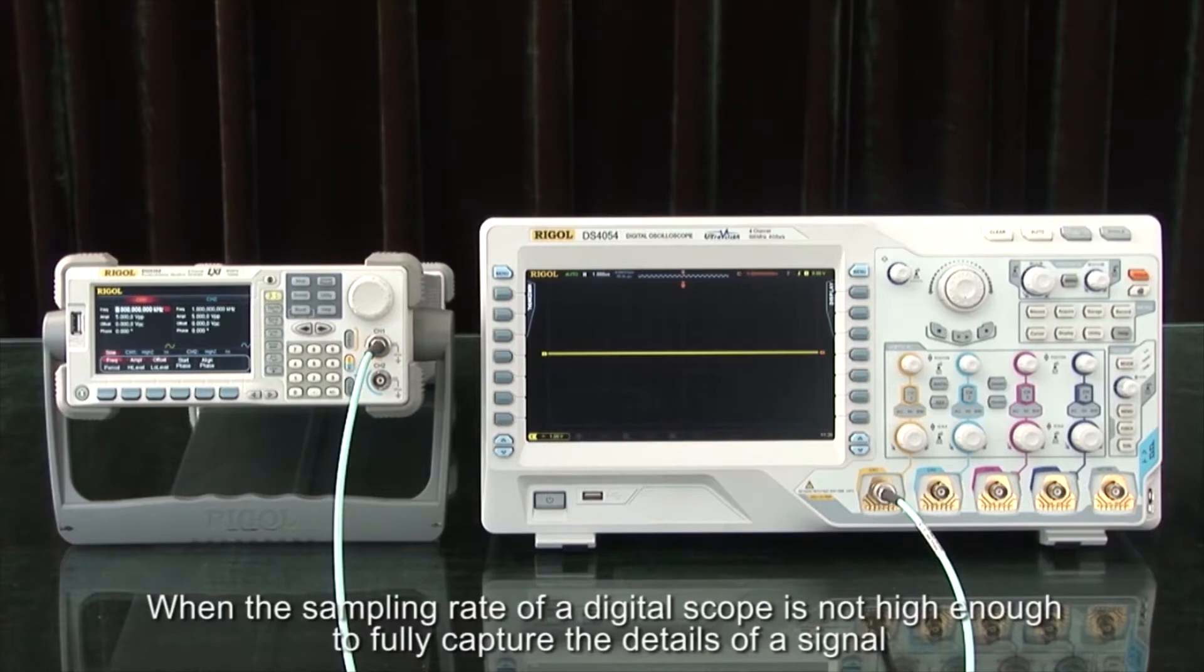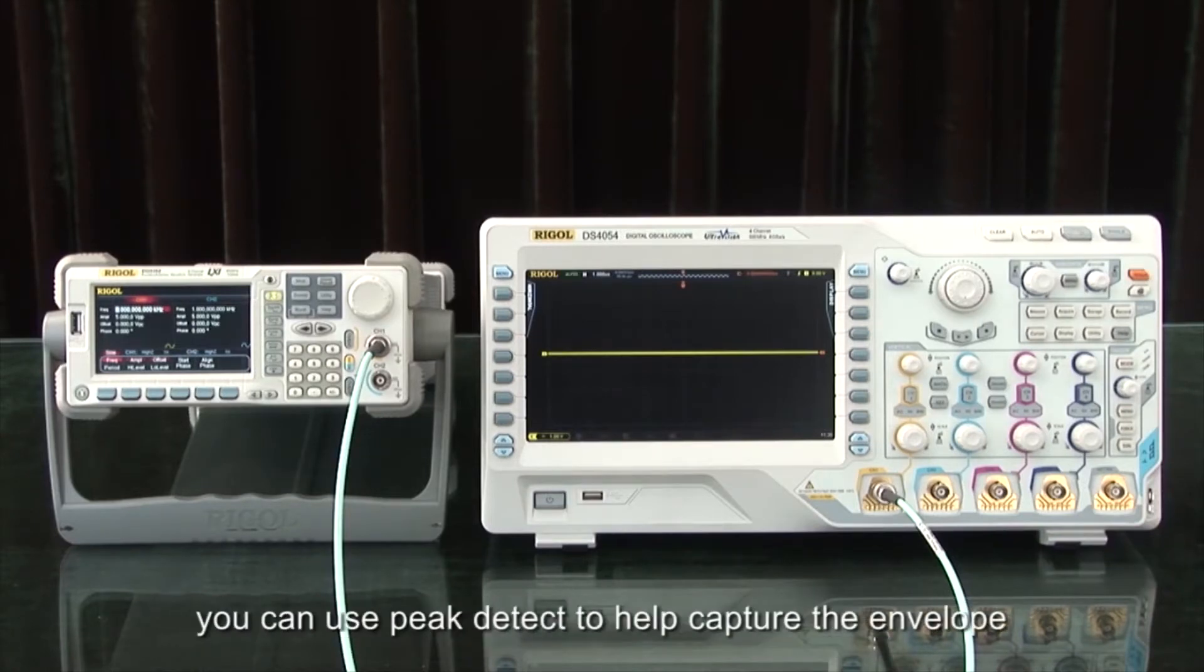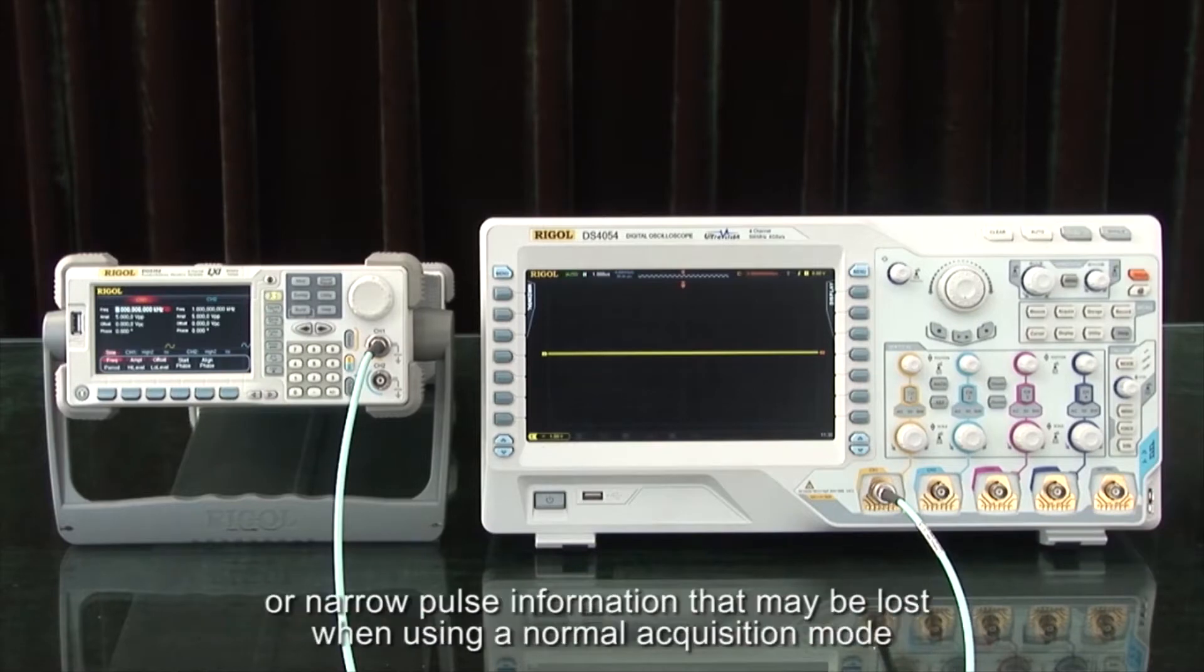When the sampling rate of a digital scope is not high enough to fully capture the details of a signal, you can use peak detect to help capture the envelope or narrow pulse information that may be lost when using normal acquisition modes.